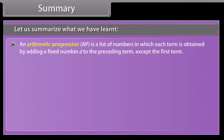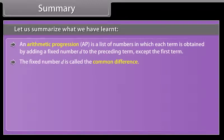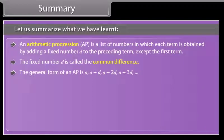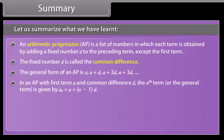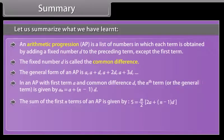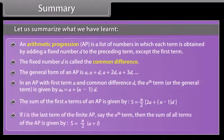Summary: An arithmetic progression (AP) is a list of numbers in which each term is obtained by adding a fixed number D to the preceding term, except the first term. The fixed number D is called the common difference. The general form of an AP is: A, A plus D, A plus 2D, A plus 3D, and so on. The Nth term (general term) is AN equals A plus (N minus 1) times D. The sum of the first N terms is S equals N over 2 times (2A plus (N minus 1) times D). If L is the last term, then S equals N over 2 times (A plus L).